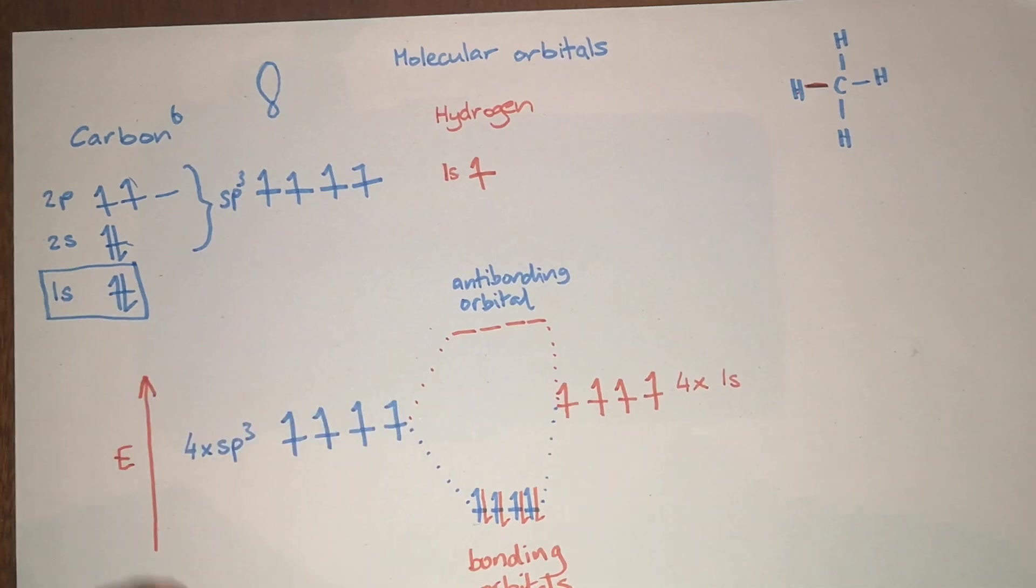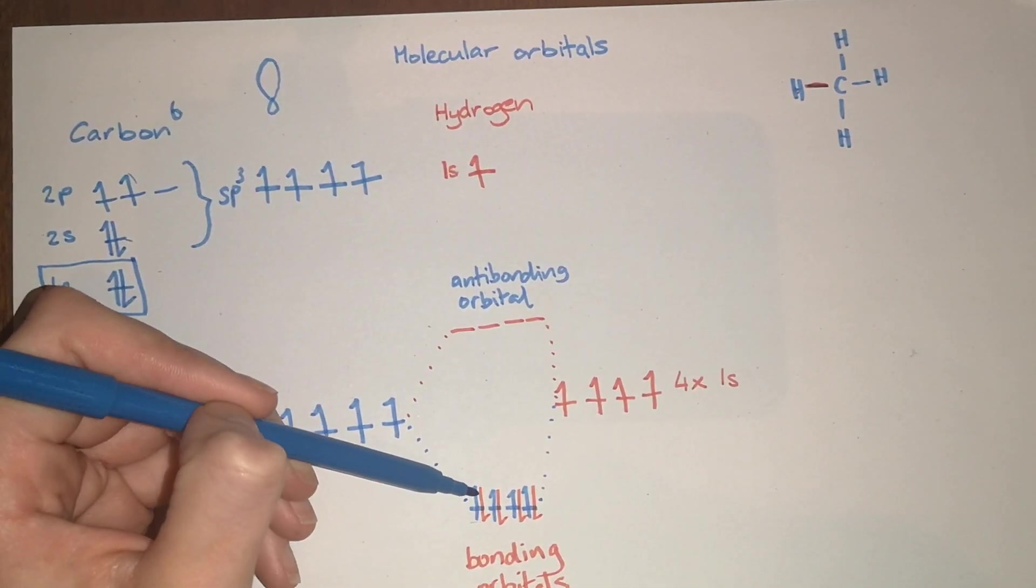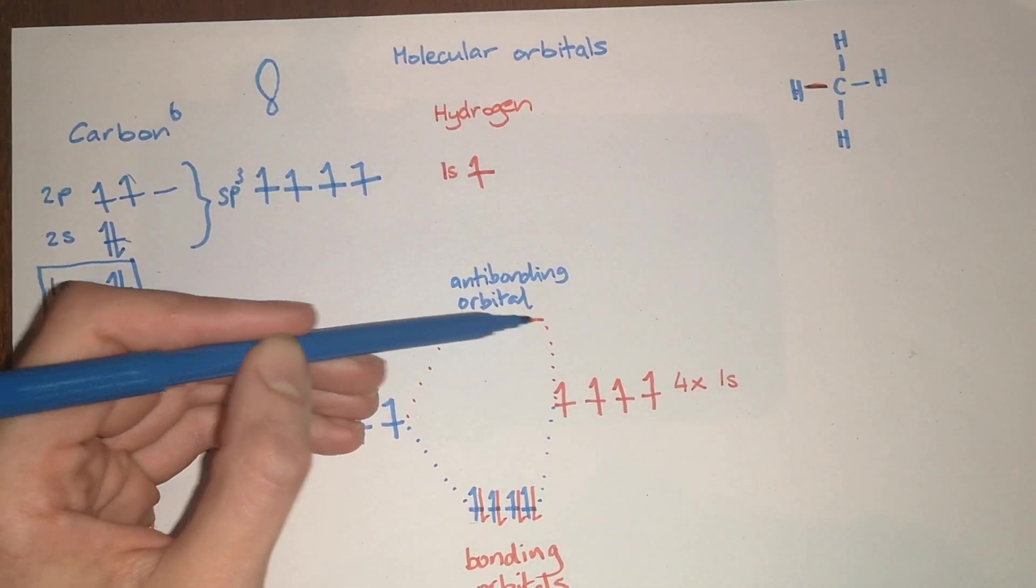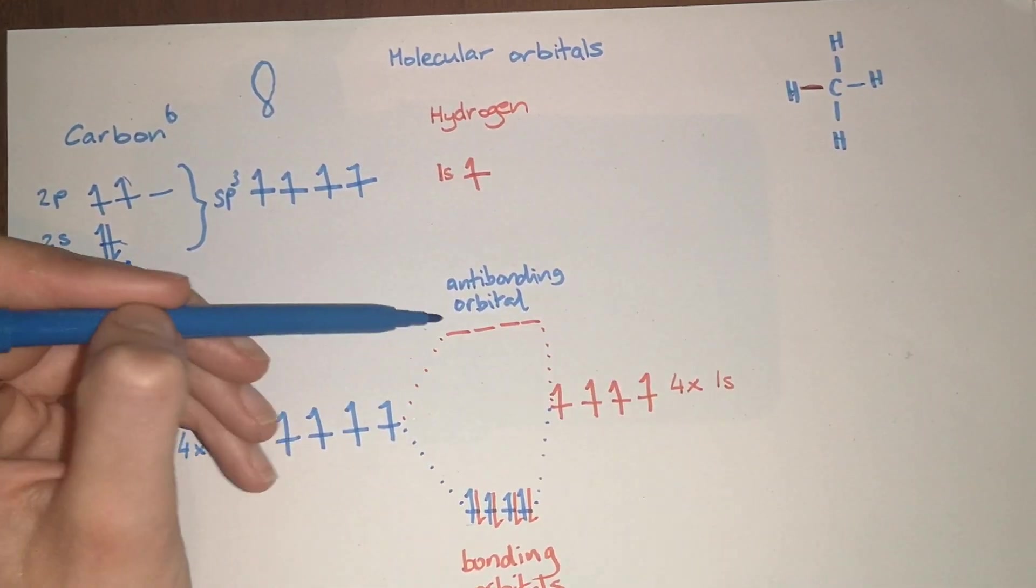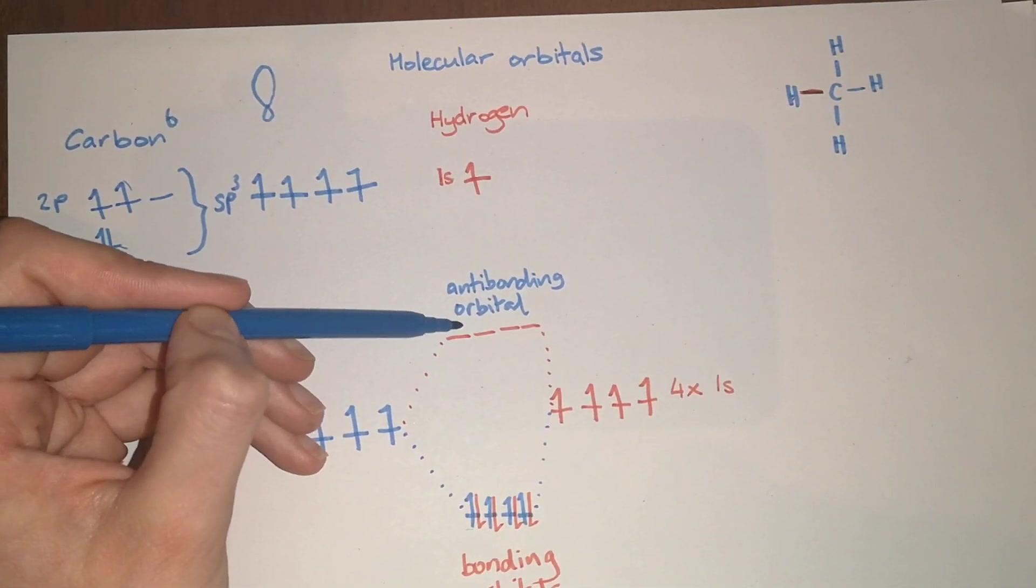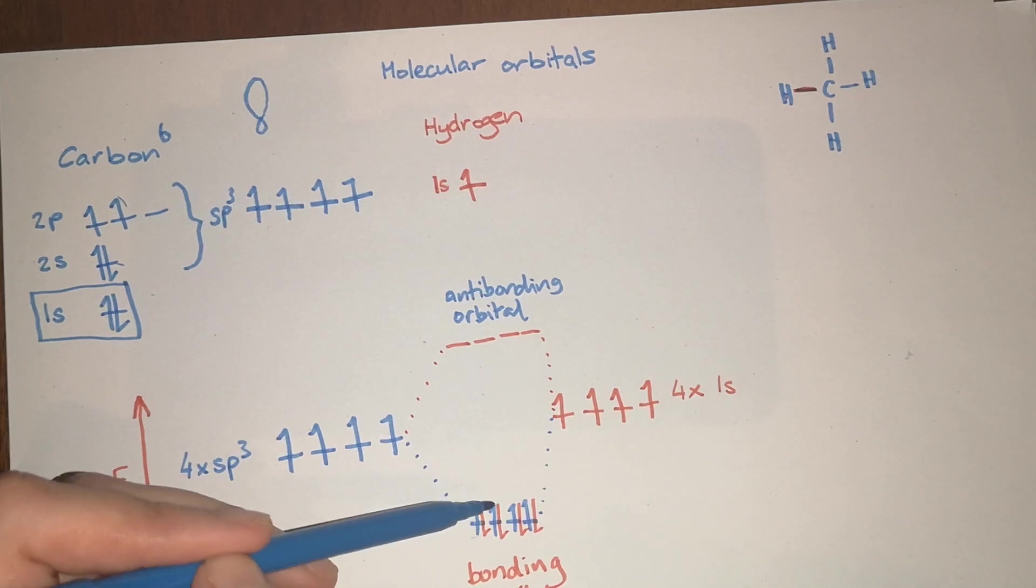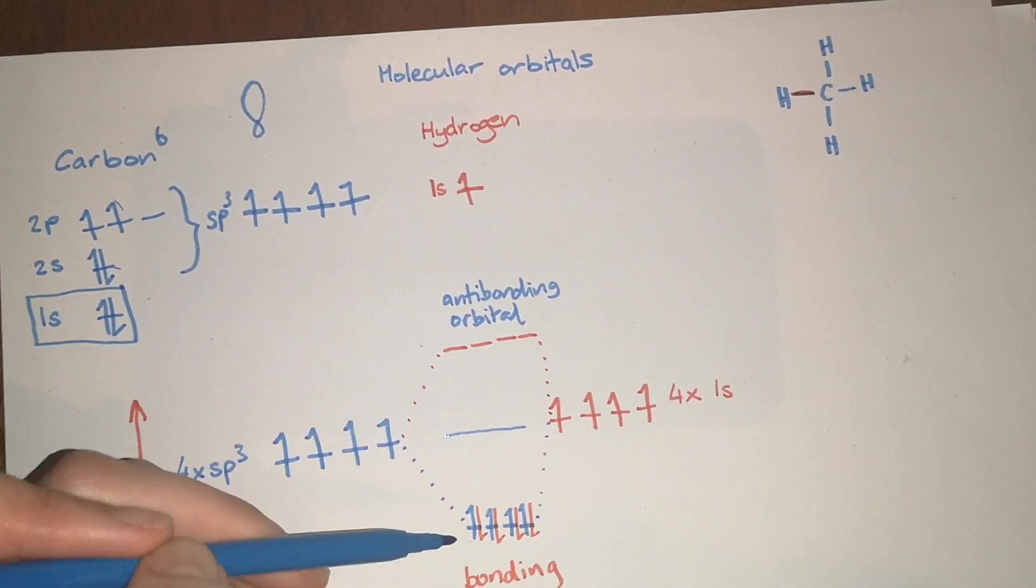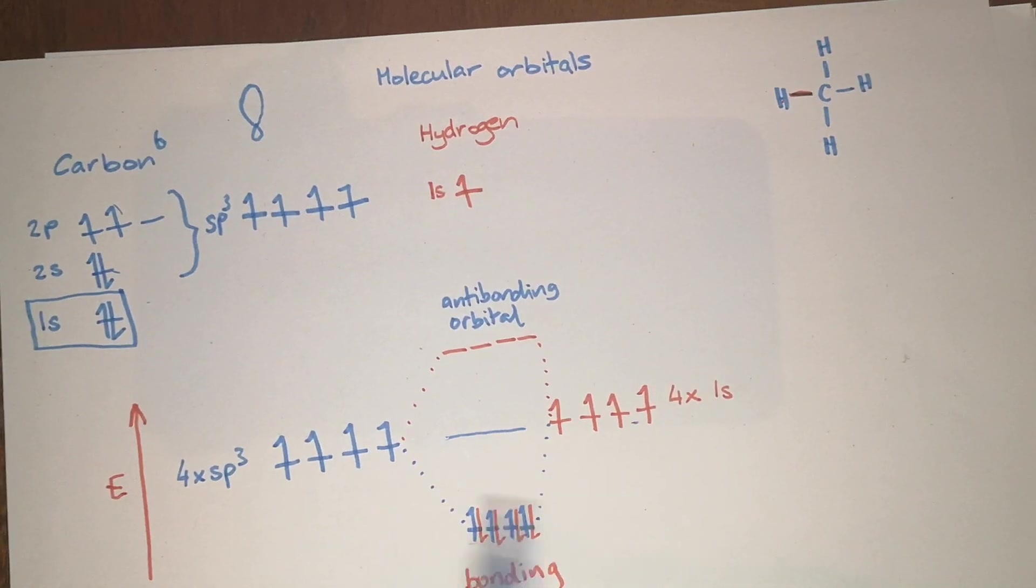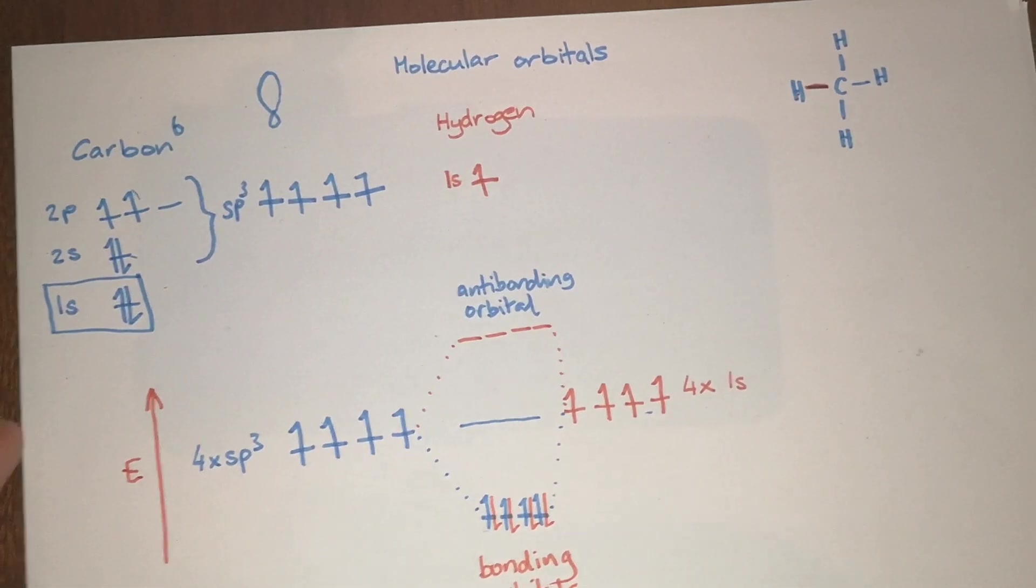However, if you start to heat it up, for example when you burn it, you start to move the electrons to the higher orbitals and put electrons into the antibonding orbitals. When you end up with an equal number of electrons in your antibonding orbitals as you do in your bonding orbitals, then you're not actually saving any energy at all by having these bonds together, so the bonds will then break.